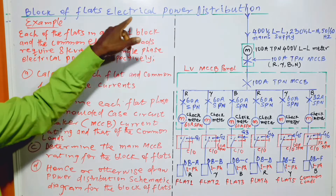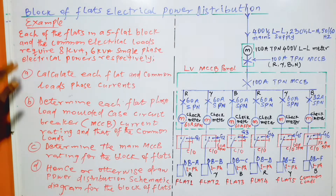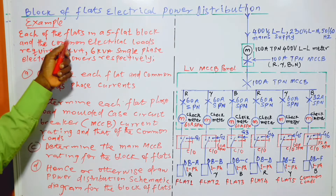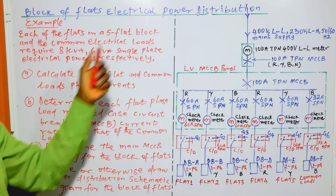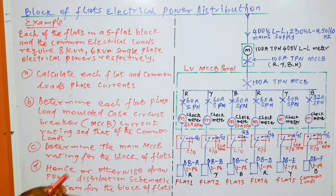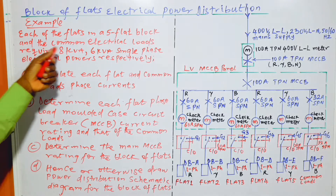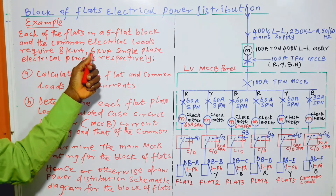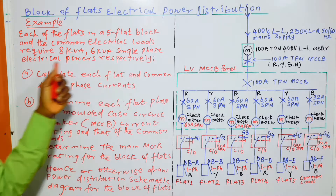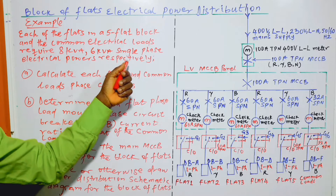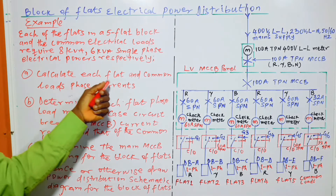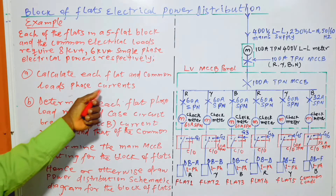Block of flats electrical power distribution example: each of the flats in a five-flat block, and the common electrical load, require 8 kVA and 6 kVA single-phase electrical powers respectively.